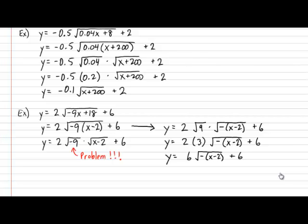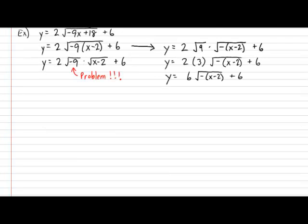Notice that now we can clearly see that the B value is, in fact, negative. Why don't you try one of these tricky situations on your own? Example: Y equals negative 2 multiplied by the square root of negative 4X minus 12, plus 3. Go ahead, pause the video, and try it on your own.